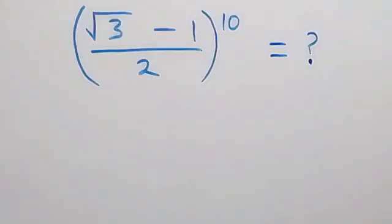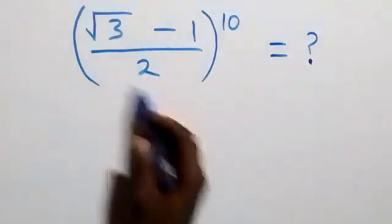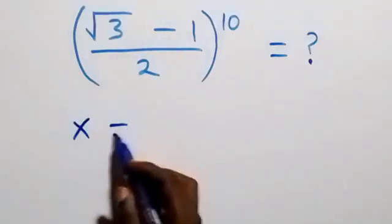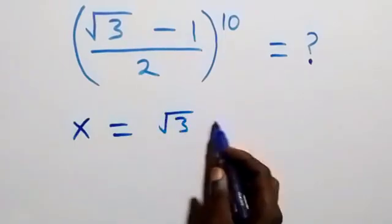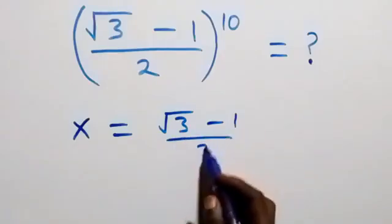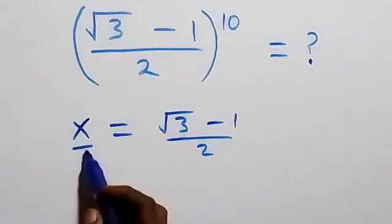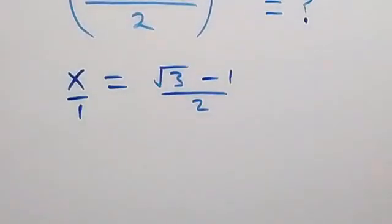Hello, you are welcome. How to solve this nice query problem. We can represent what is inside here as a letter, so let x be equal to root 3 minus 1 over 2. That is from here this x over 1, and we can cross multiply.